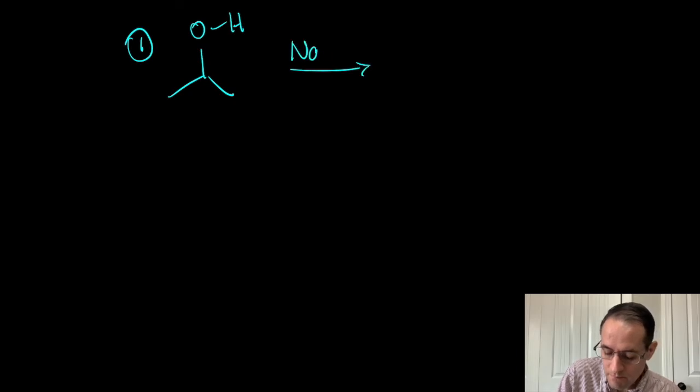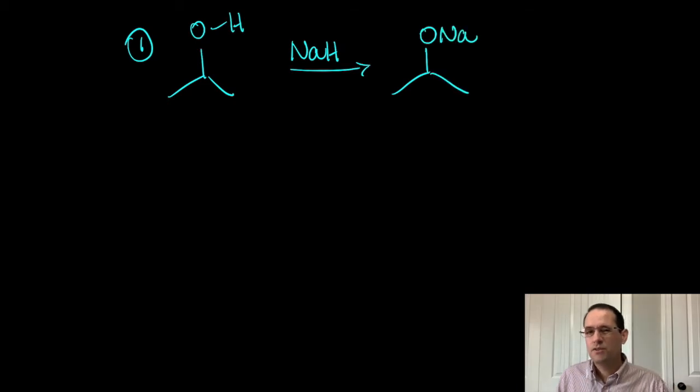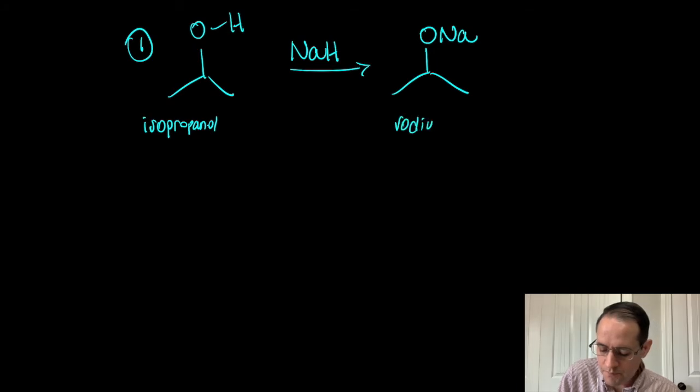First and foremost, the way we're going to deprotonate is by sodium hydride. So if we have an alcohol, isopropanol, and we treat this with sodium hydride, we can make sodium isopropoxide. So this is isopropanol, and this would be called sodium isopropoxide.